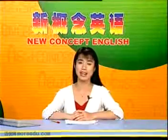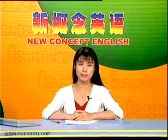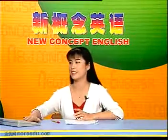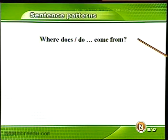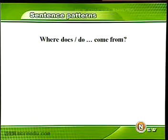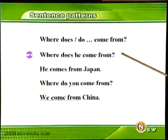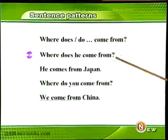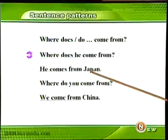好，我们刚才看过了课文中的主要语言点。下面我们来看一看本课中的基本句型。本课中我们学习了如何询问他人是哪国人：Where does/do...come from? Does用在第三人称单数，do用于其他的人称。比如说，Where does he come from? He comes from Japan. 他是哪国人？他是日本人。请注意，come from后面加的是国名。